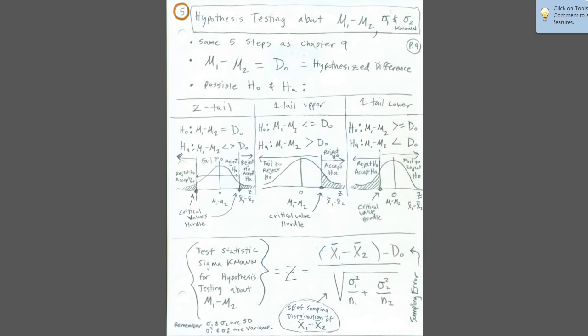Last chapter, chapter 9, we learned the five steps for hypothesis testing, and it's exactly the same here. The only difference is we're going to be testing the difference between mu sub 1 and mu sub 2. We'll set up the hypothesized difference as d sub 0, and that means we can have two-tail, one-tail upper, or a one-tail lower test.